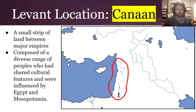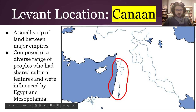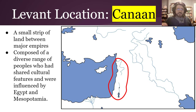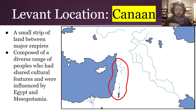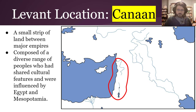You can probably begin to guess the story here because you can see Mesopotamia over here on the right and Egypt's little delta down there on the left. Canaan is this small strip of land between major empires, composed of a diverse range of people who had shared cultural features and who were influenced by both of those other places.